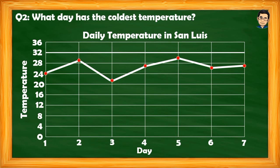For the second question: what day has the coldest temperature? As clearly seen in the graph, the coldest day is Day 3, because the recorded temperature was 21°C — the lowest temperature recorded, meaning it was the coldest.